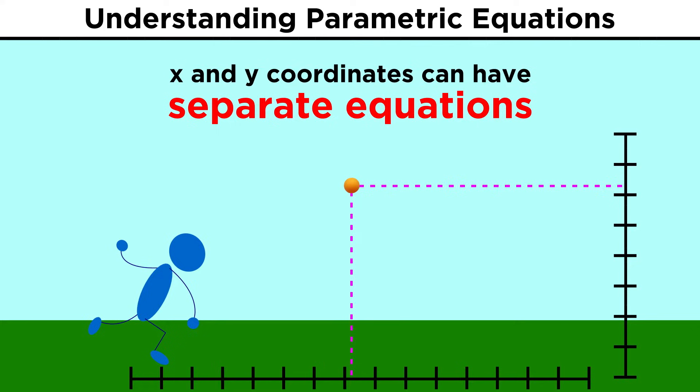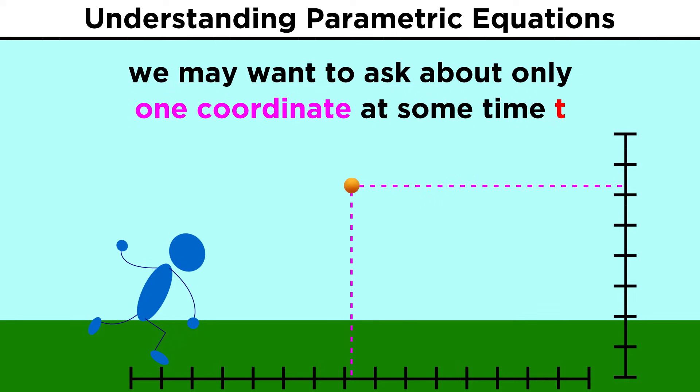So in such a case, it can make sense to have an equation that models the X coordinate of the ball with respect to time, and an equation that models the Y coordinate of the ball with respect to time, as they do indeed depend on the parameter of time differently, and we may sometimes want to ask a question about one of these values and not the other.